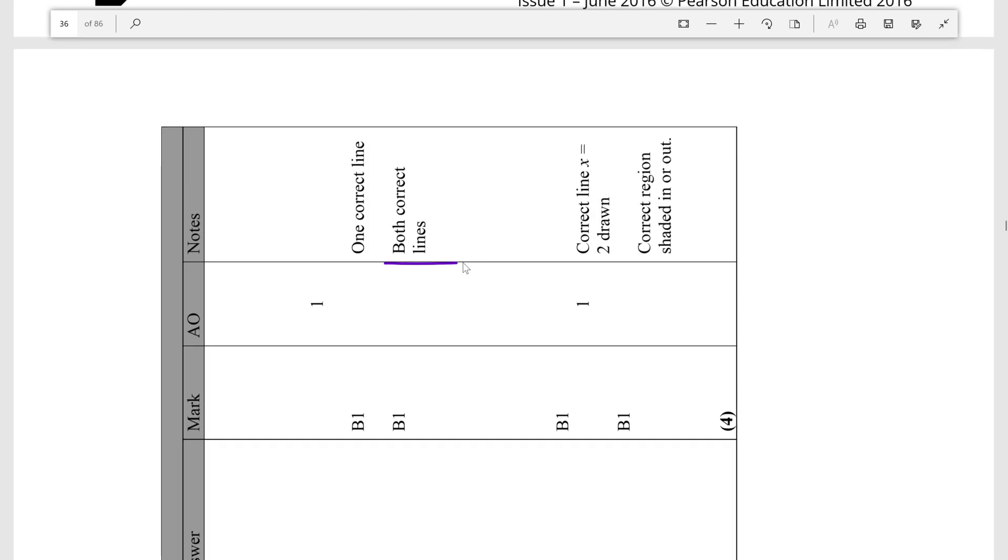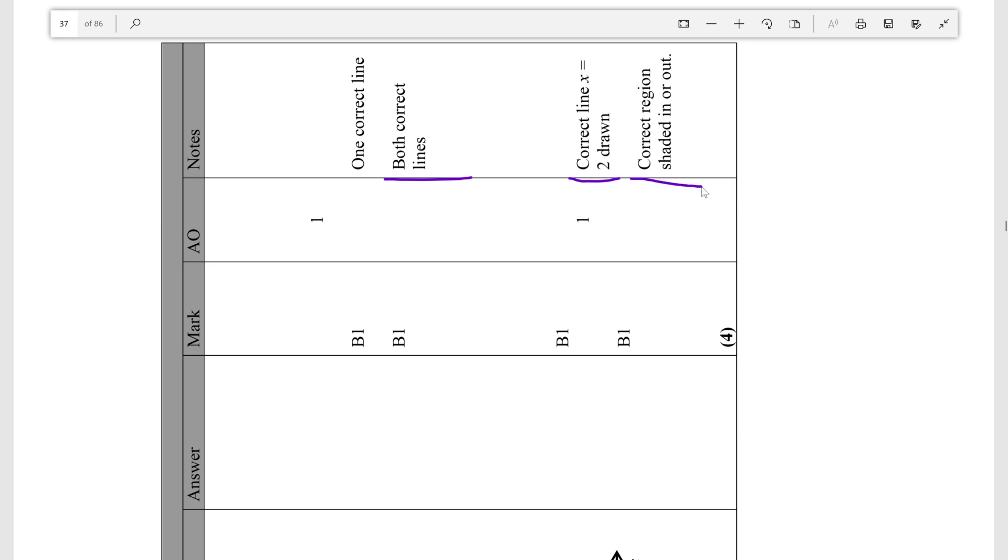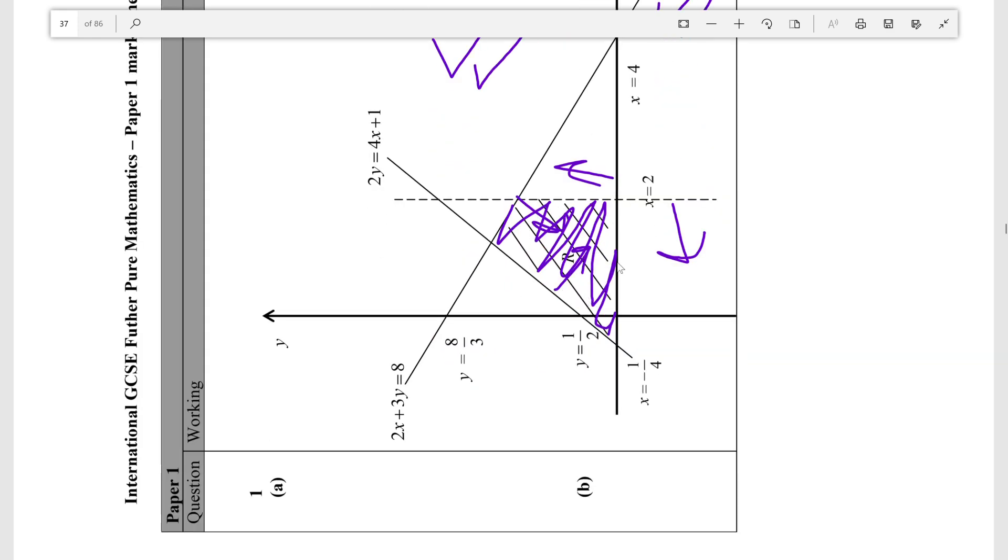You just have to have both correct lines for the two marks for (a), and then one mark is for this line here because any idiot can tell you that it has to be above the x-axis, and one mark is for getting the actual region correct. So that means you need to demonstrate that you know which side of which line the final region is going to be in. Alright, thanks for watching.